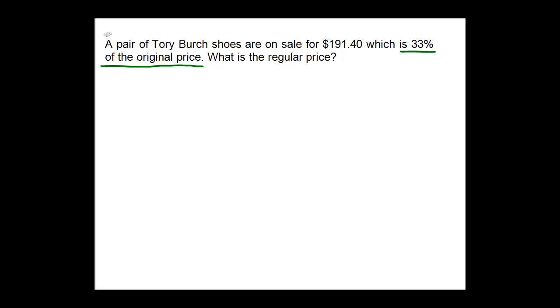Now assuming you set this up and tried it on your own, let's do it together. A little bit of a wrinkle that makes it different than our last problem. Let X be the original price. And this problem says this time that the X, or that the price that we're given, the 191.40, is 33% of the original. So unlike the other problem where we had to perform a subtraction because it told us the discount, this one they just tell us what percentage of the original it is.